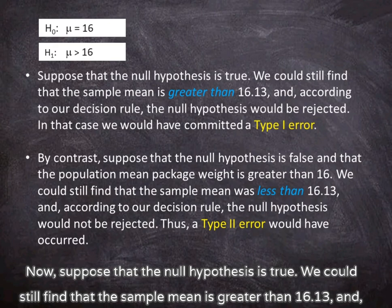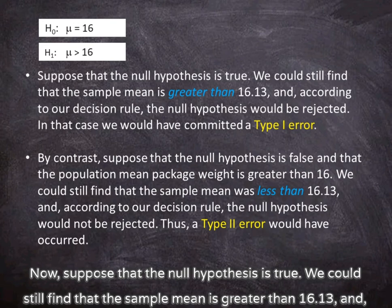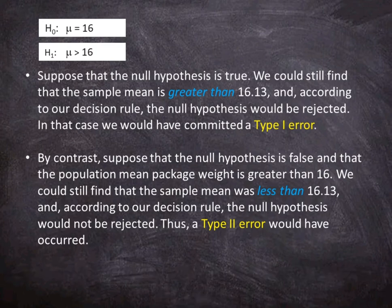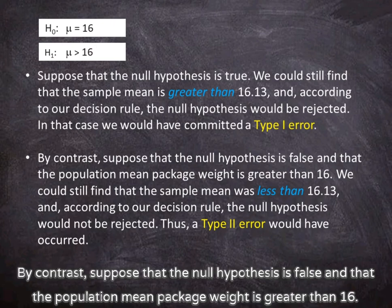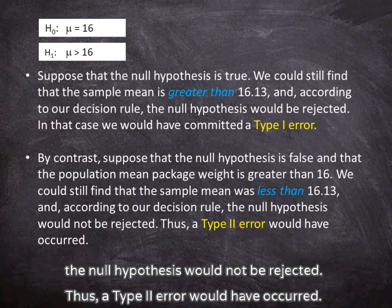Suppose that the null hypothesis is true. We could still find that the sample mean is greater than 16.13, and according to our decision rule, the null hypothesis would be rejected. In that case we would have committed a type 1 error. By contrast, suppose that the null hypothesis is false and that the population mean package weight is greater than 16. We could still find that the sample mean was less than 16.13, and according to our decision rule, the null hypothesis would not be rejected. Thus, a type 2 error would have occurred.